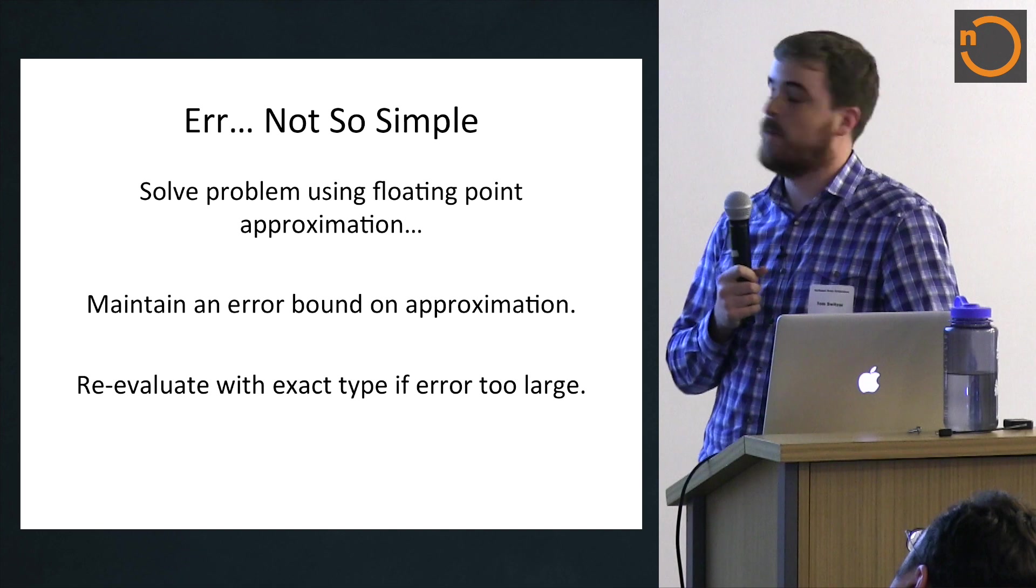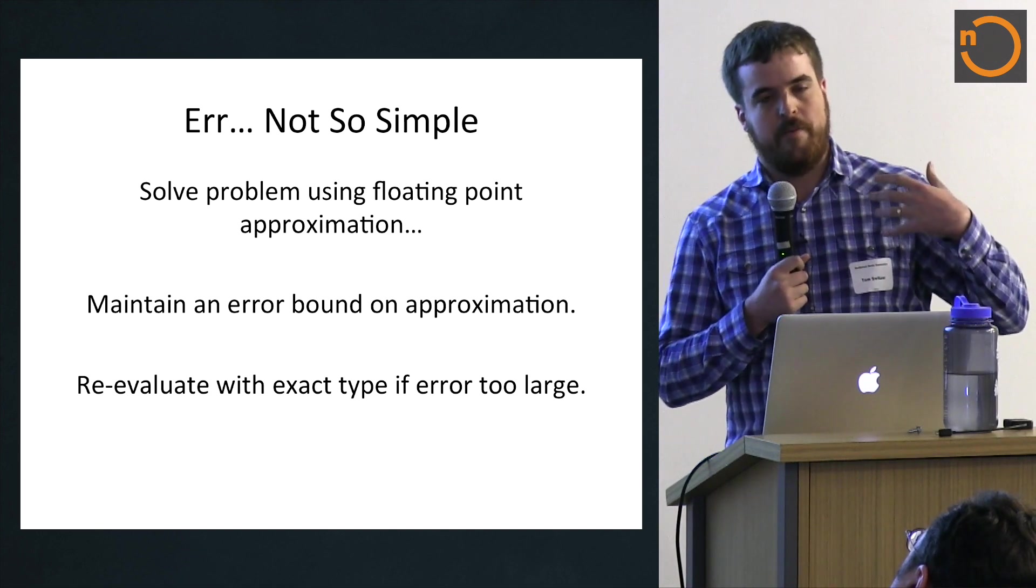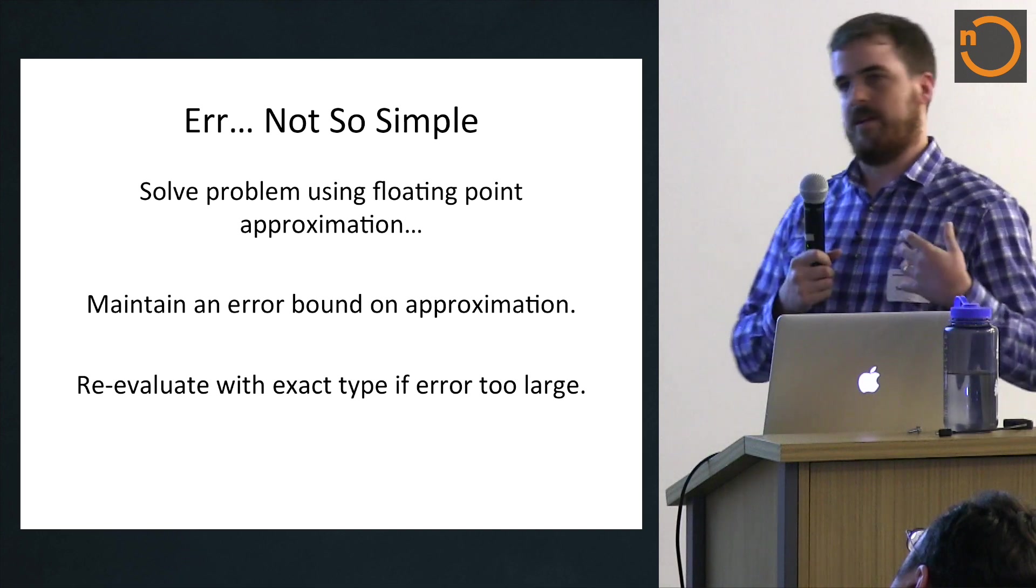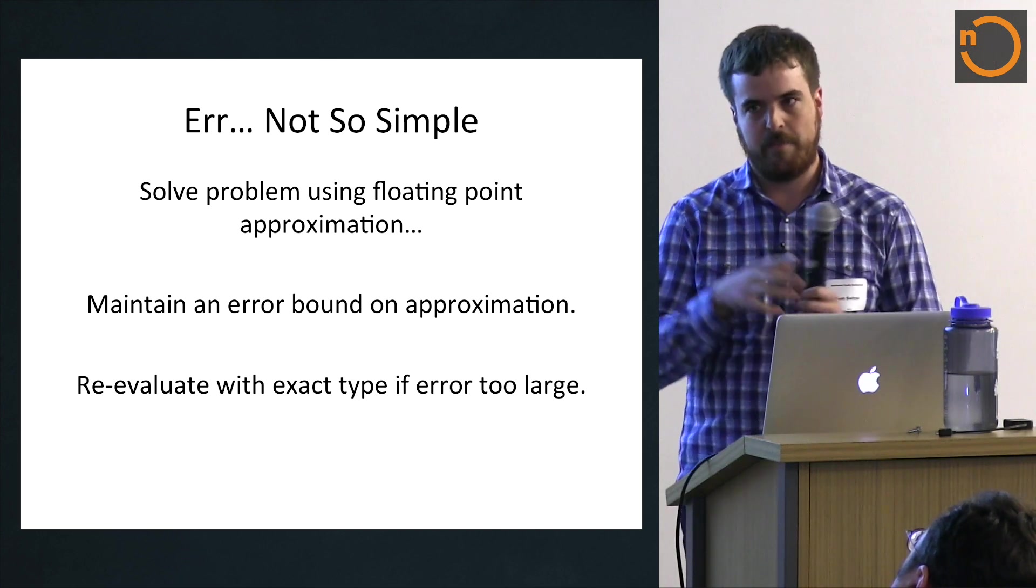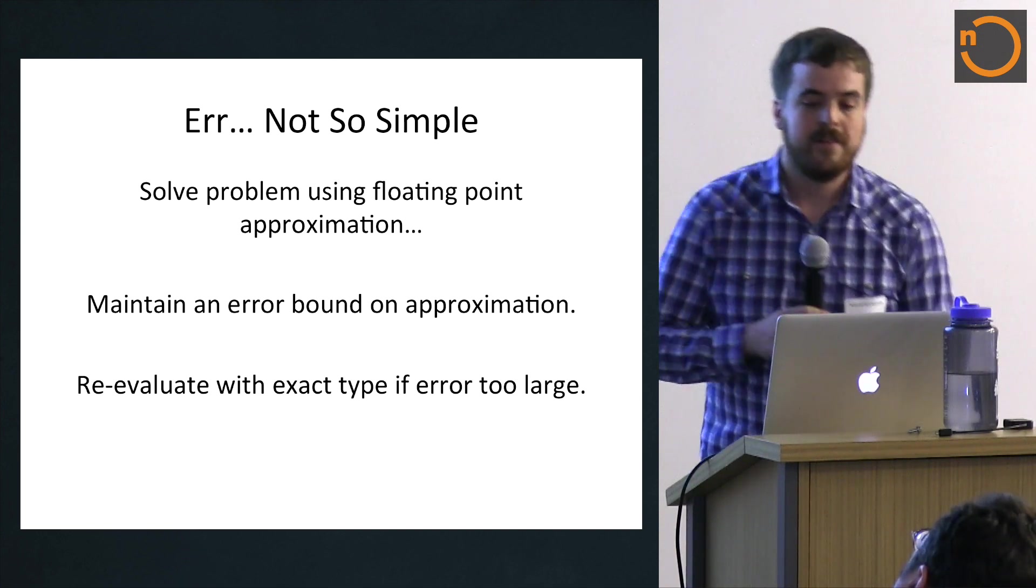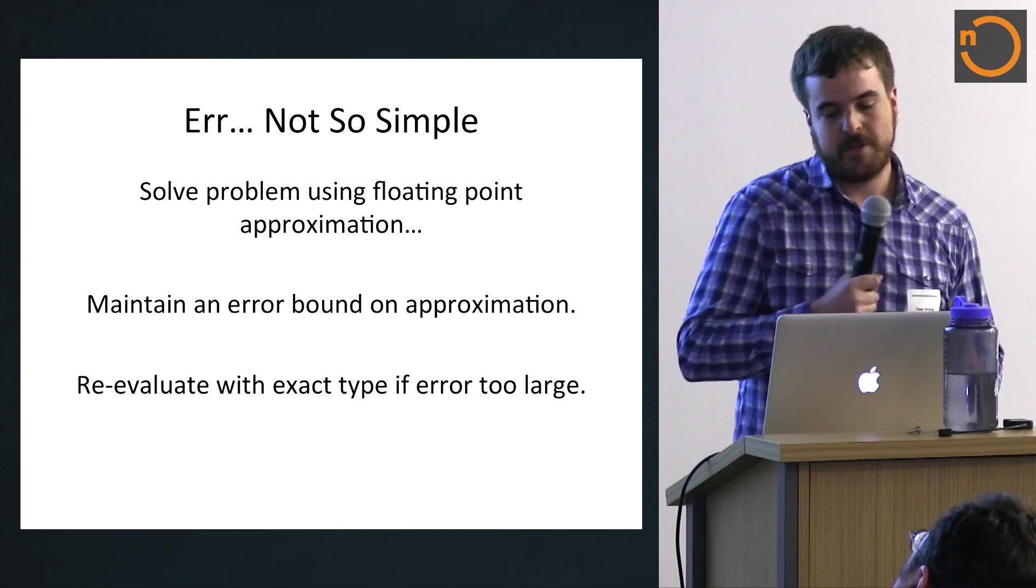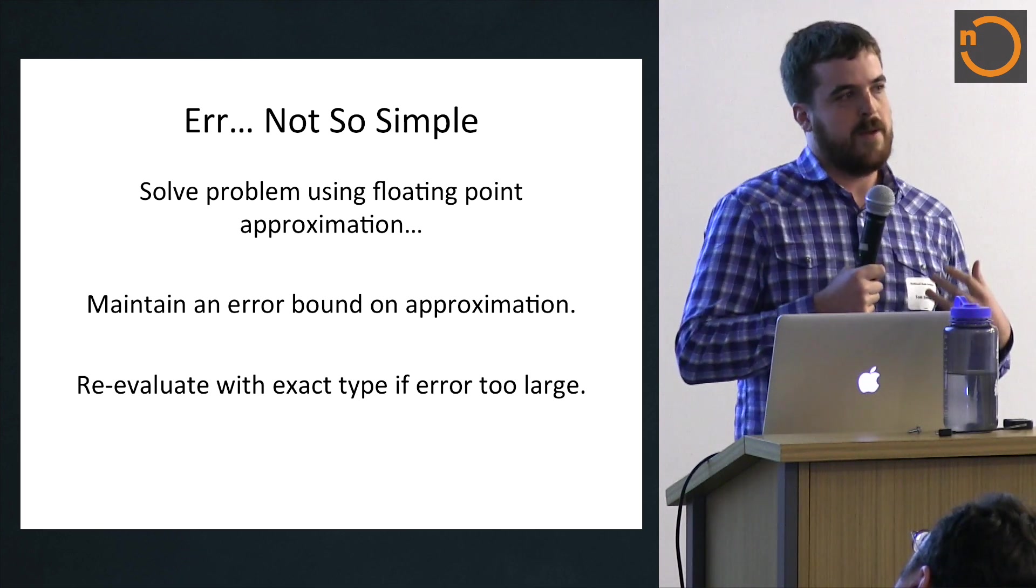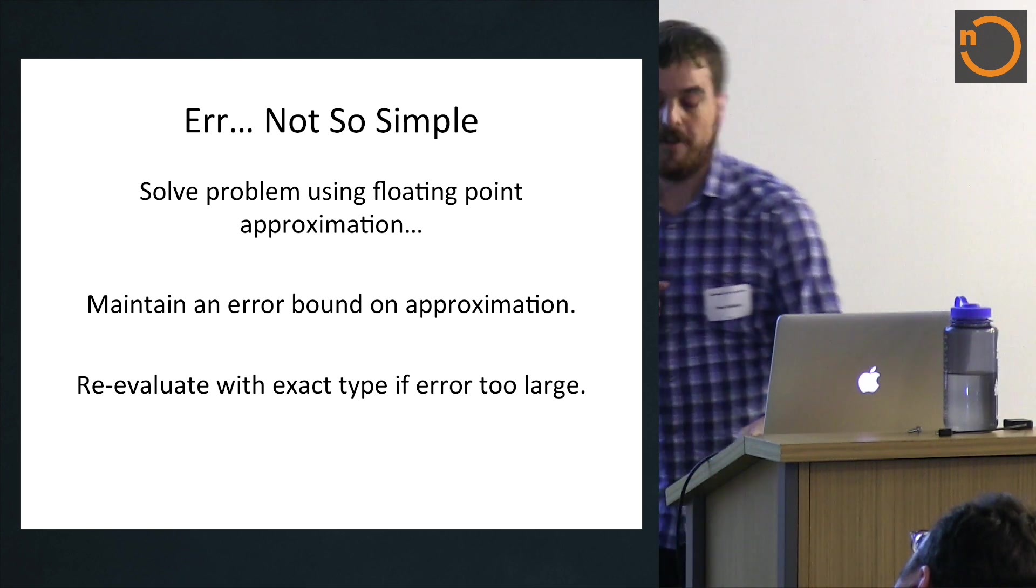So basically, the main idea behind floating point filters is that we solve our problem using a number type like double as usual. But while we're doing that, we also maintain an error bound on this number, on the approximation, so we know how bad it is. And what we do is then when we come to some point where we actually need to return a solution, we can then check to see if the error bound is acceptable, and if it's not, we can then fall back and re-evaluate with an exact type.